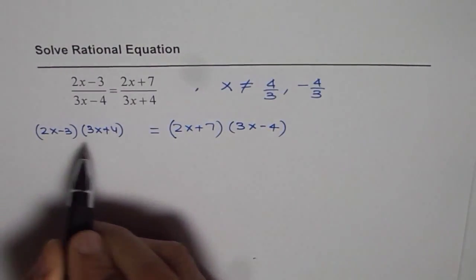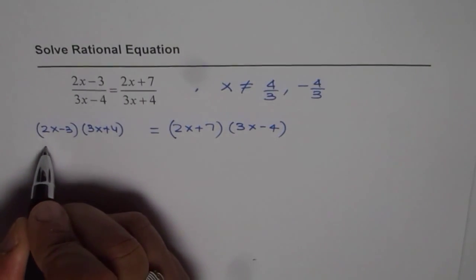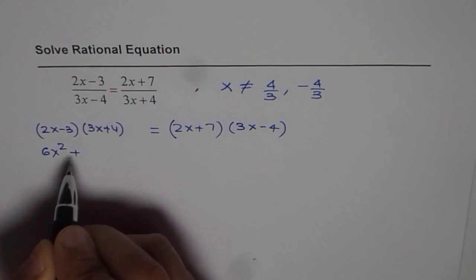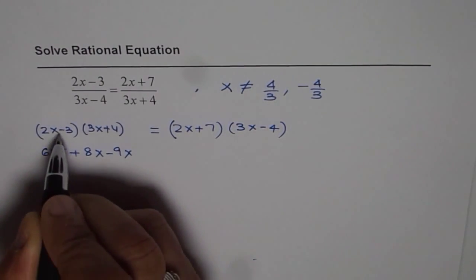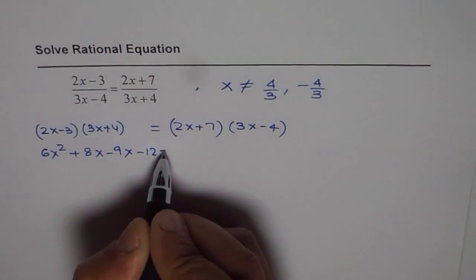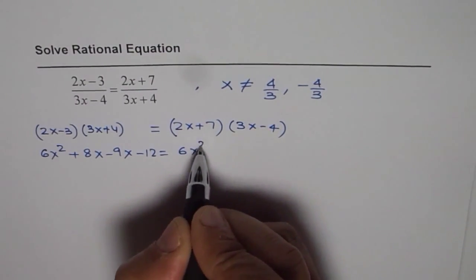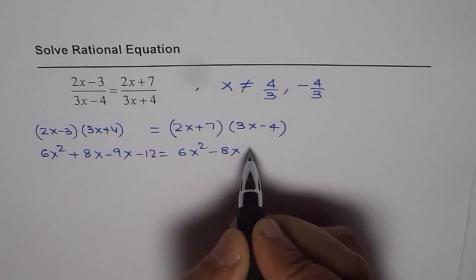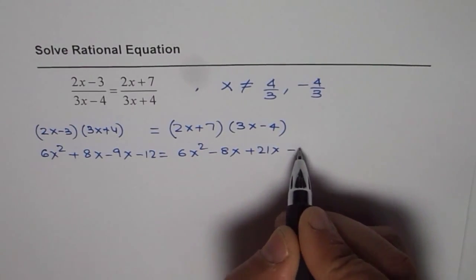Now we can apply the distributive property and expand. 2x times 3x is 6x squared, plus 8x, minus 9x, minus 12, equals 6x squared, minus 8x, plus 21x, minus 28.